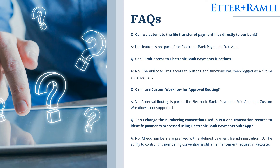Here are some frequently asked questions. Can we automate the file transfer of payment files directly to our bank? The answer is, this feature is not part of the Electronic Bank Payments Suite app. Can I limit the access to Electronic Bank Payments functions? The answer is no — the ability to limit access to buttons and functions has been lodged as a feature enhancement. Can I use a custom workflow for approval routing? No, approval routing is part of the Electronic Bank Payments Suite app and custom approval workflow is not supported. Can I change the numbering convention used in PFA and transaction records? No, check numbers are prefixed with a defined payment file administration ID, and the ability to control this numbering convention is still an enhancement request in NetSuite.